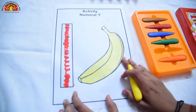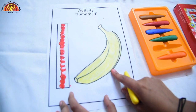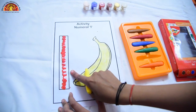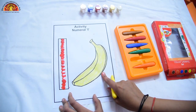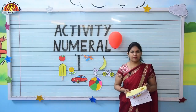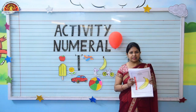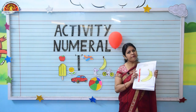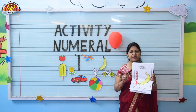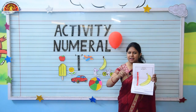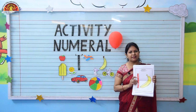Kids, color both these pictures beautifully. This is numeral one, and this is one banana — I have one banana. Do this activity at your home and paste it in your fun notebook. Don't forget to identify numeral one. Enjoy the coloring. Bye-bye, have a good day!